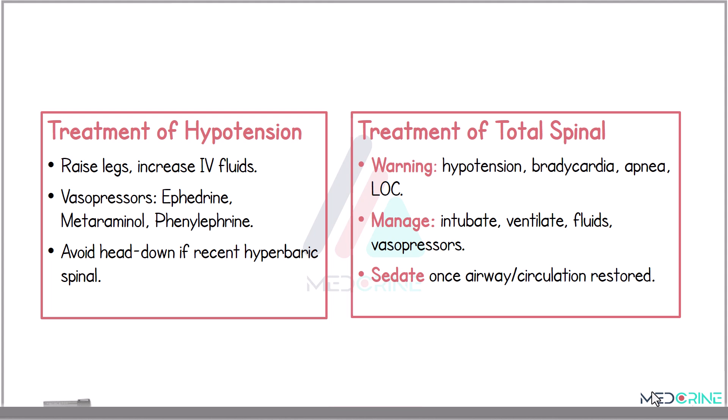To treat hypotension associated with spinal anesthesia, you elevate the patient's legs, increase intravenous fluids, and administer vasopressors such as ephedrine, metaraminol, or phenylephrine. You need to avoid Trendelenburg positioning, especially if you are using hyperbaric solutions, as this can cause excessive cephalad spread.